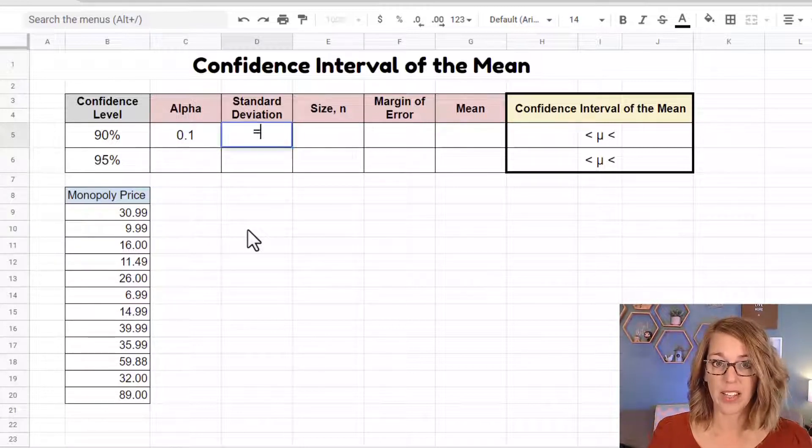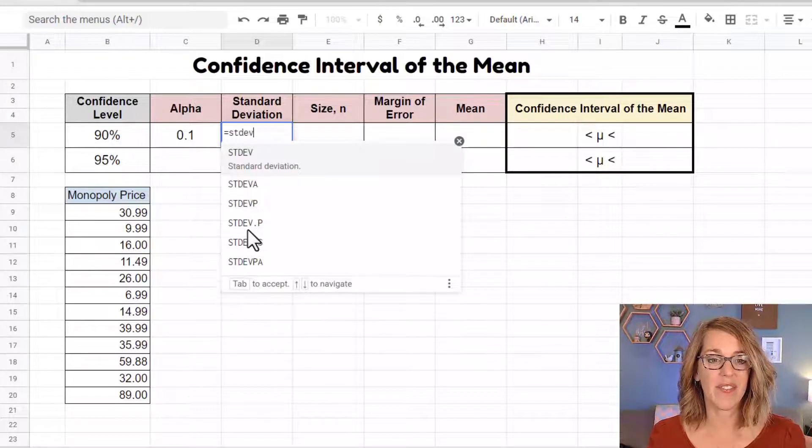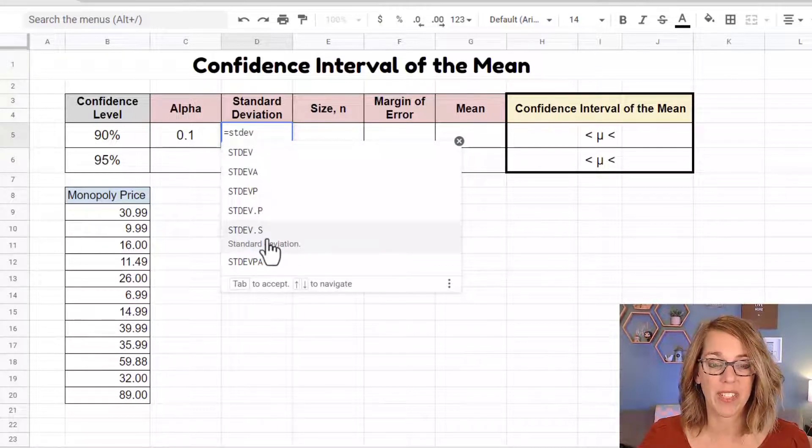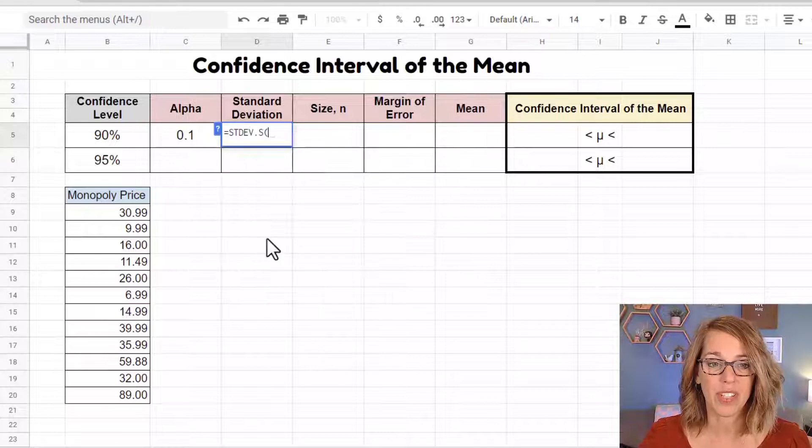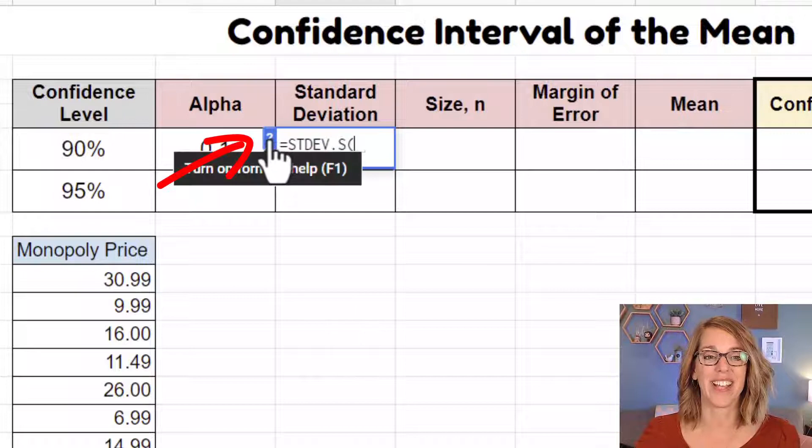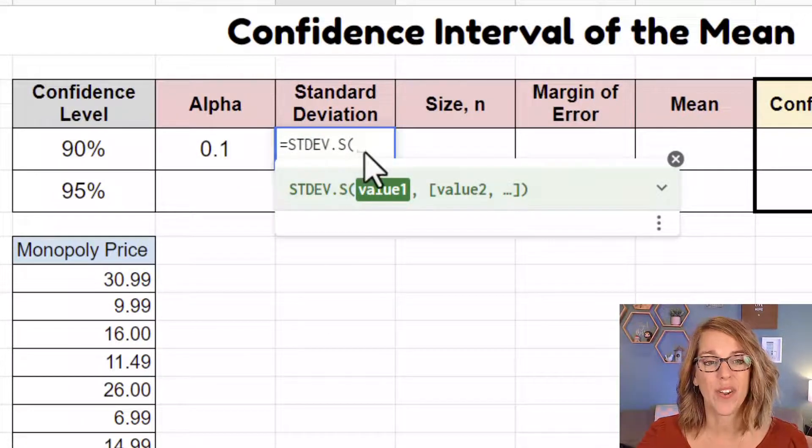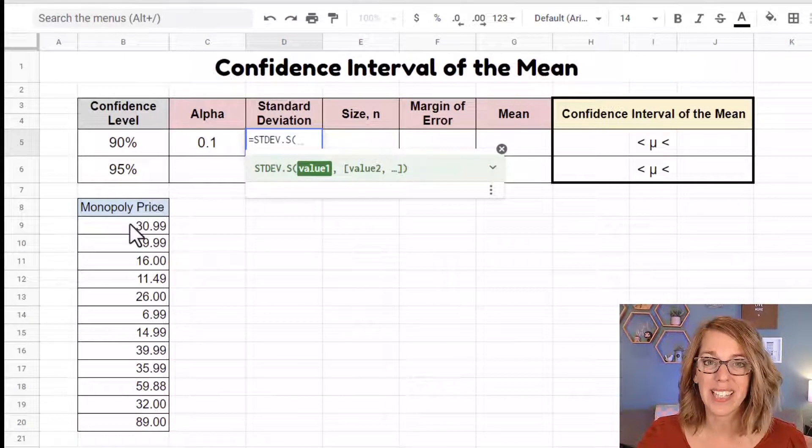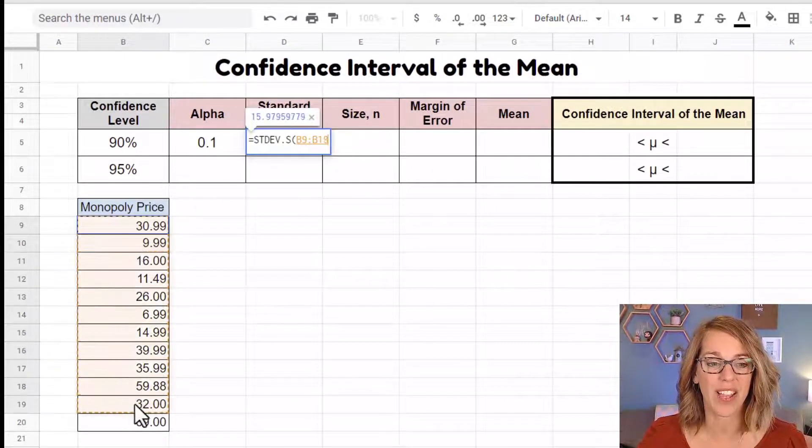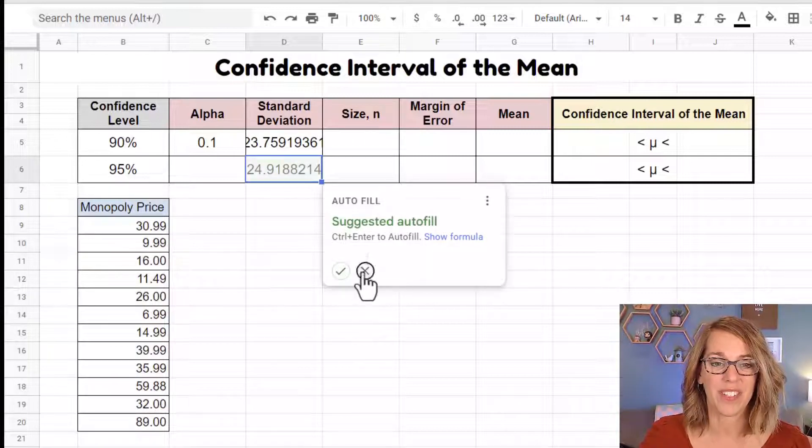I'm going to do the standard deviation next. This is also a parameter that we need for the confidence interval function. The standard deviation is STDEV and I'm looking for the sample standard deviation. I'm going to choose this one and then parenthesis. If you want to know what input it's asking for and it doesn't tell you, go ahead and click on the question mark here. So it wants to know what values. I'm going to click, hold and drag through my data and then I'll hit enter. Again, I don't want to autofill.